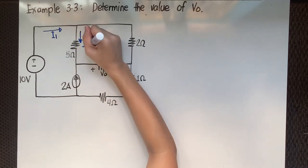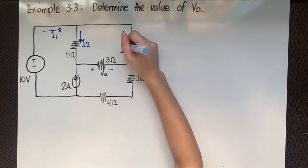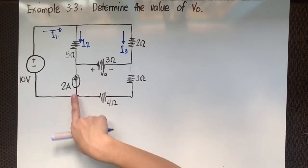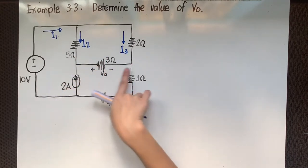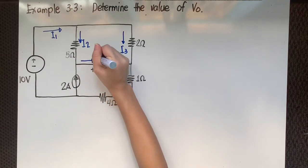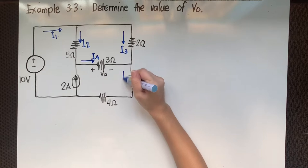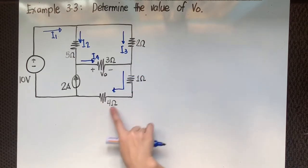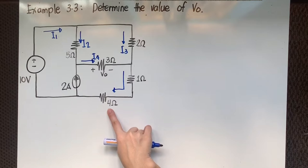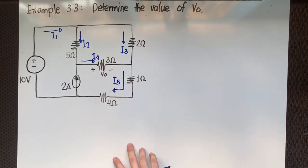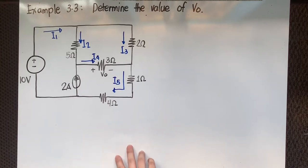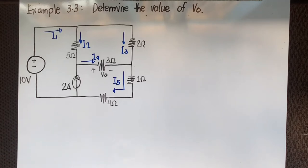From that junction, it will supply I sub 2 on this branch and I sub 3 on this branch. This is a current source, so it will supply current to this junction. The 2-ampere source will supply to the right toward the 3-ohm resistor — that's I sub 4. Then we have I sub 5. Since the 1-ohm and 4-ohm resistances are in series, the same current flows through them — that's I5. This 3-loop circuit has 6 branches.